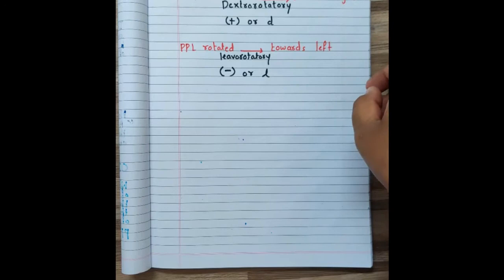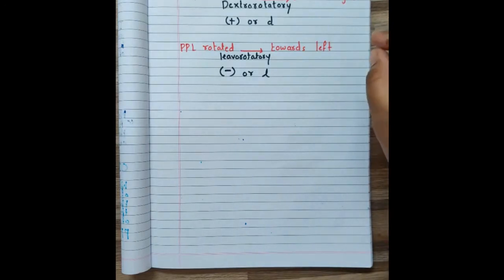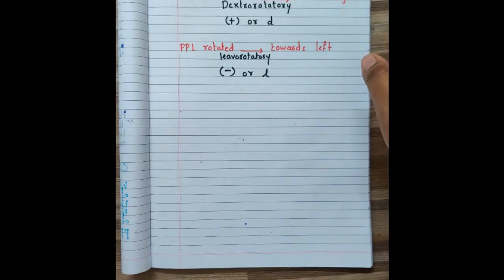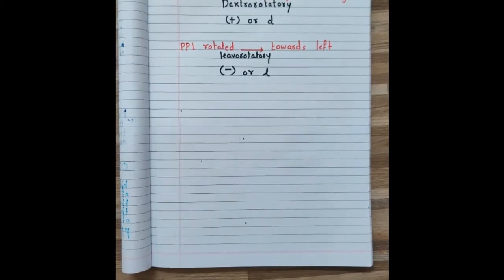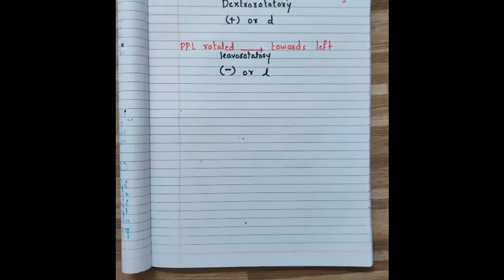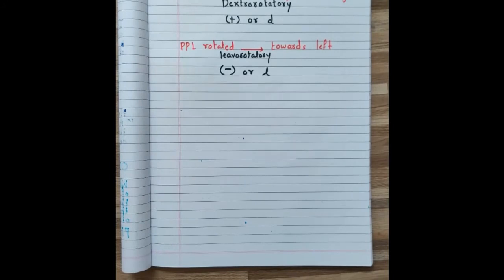Remember: by no method can we determine whether a compound is dextrorotatory or levorotatory just by looking at the structure of the molecule. It has to be determined through experiment only.